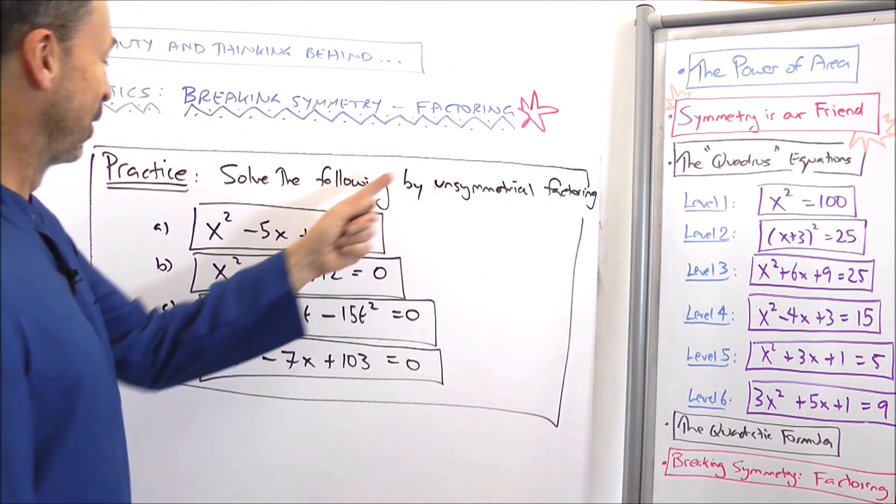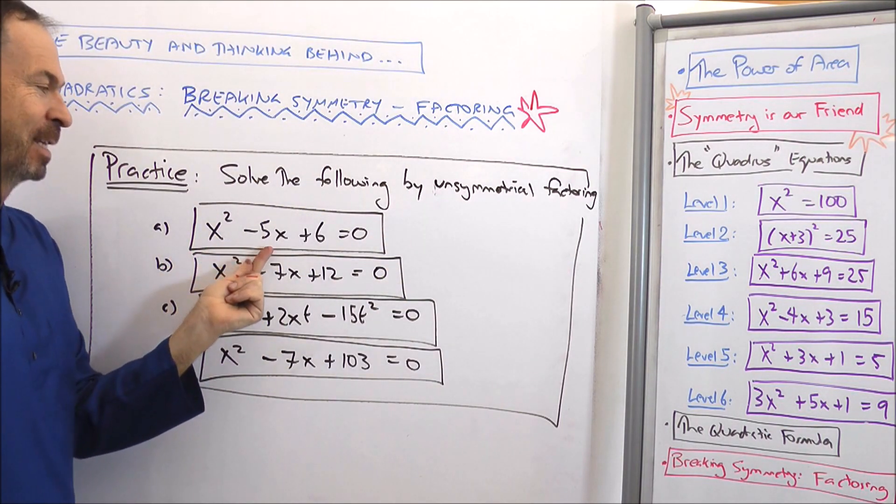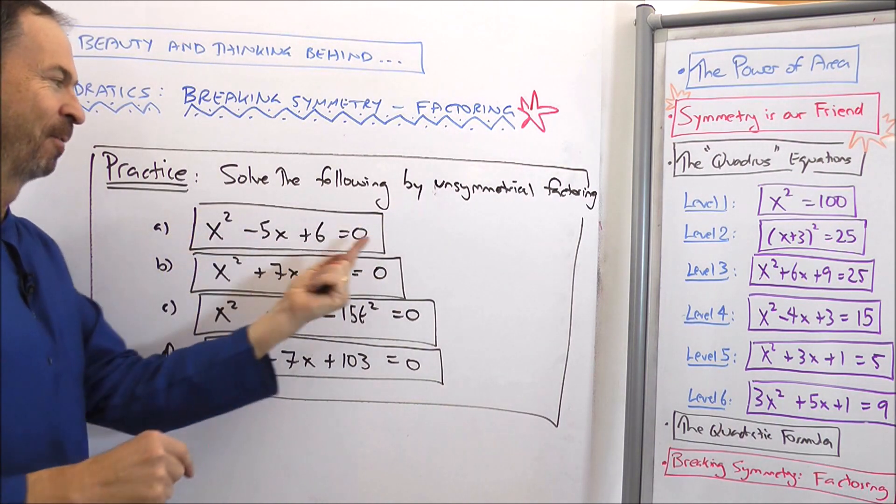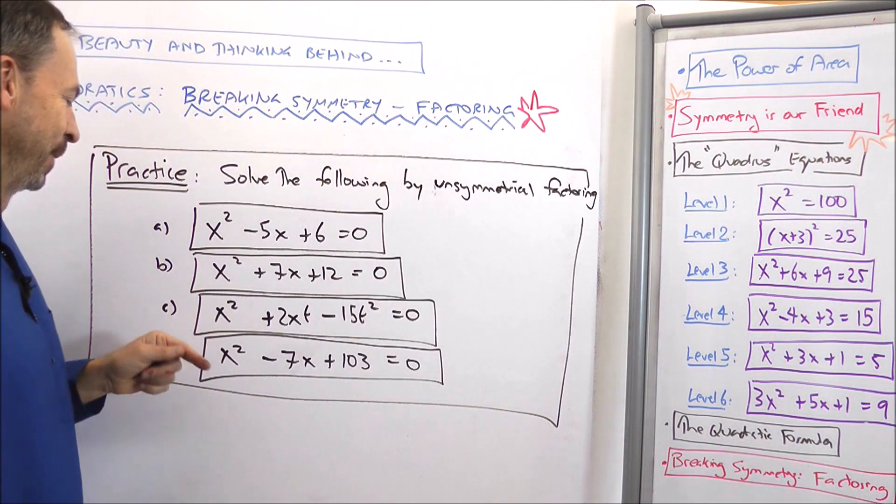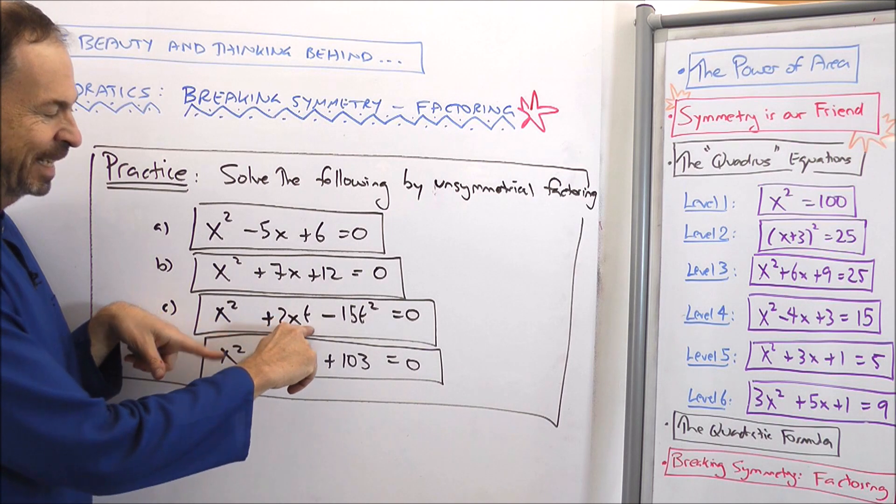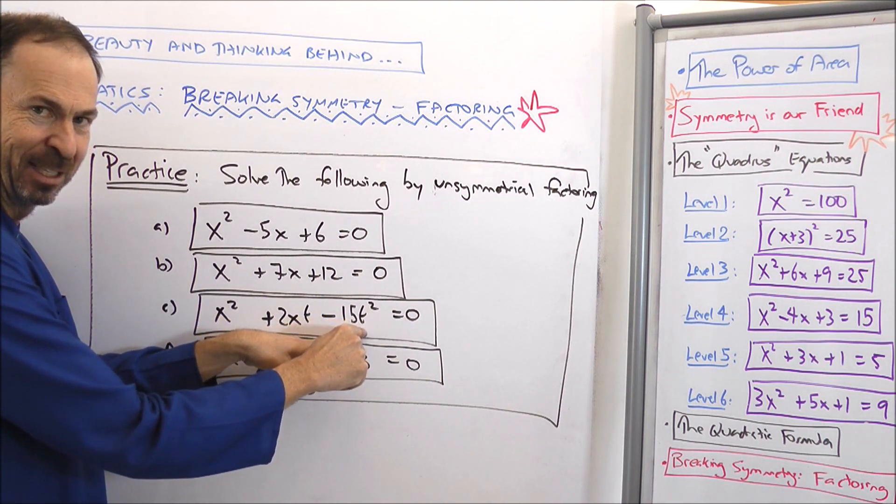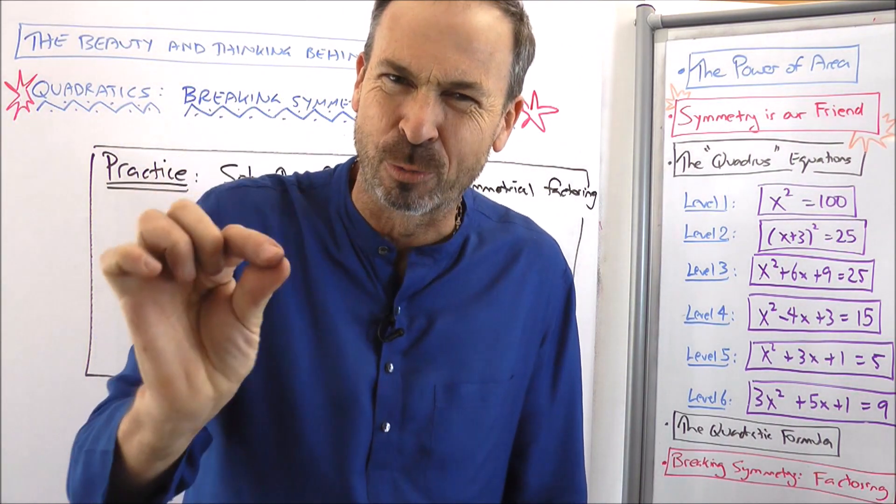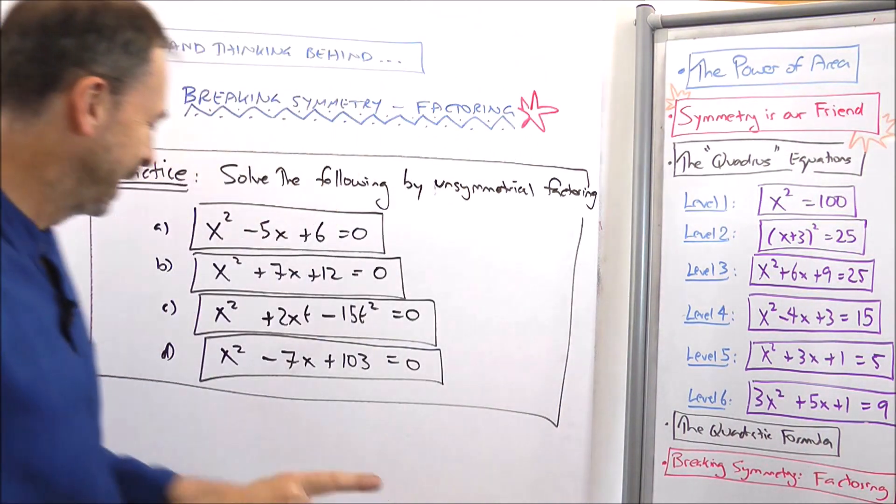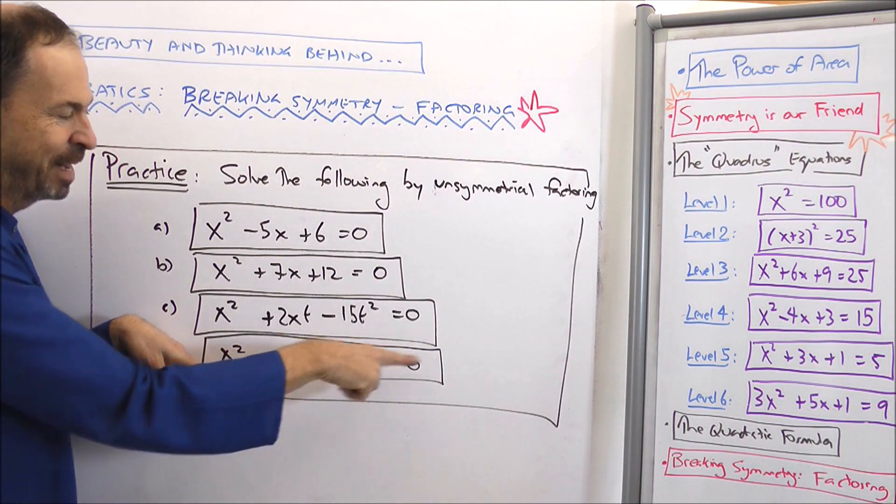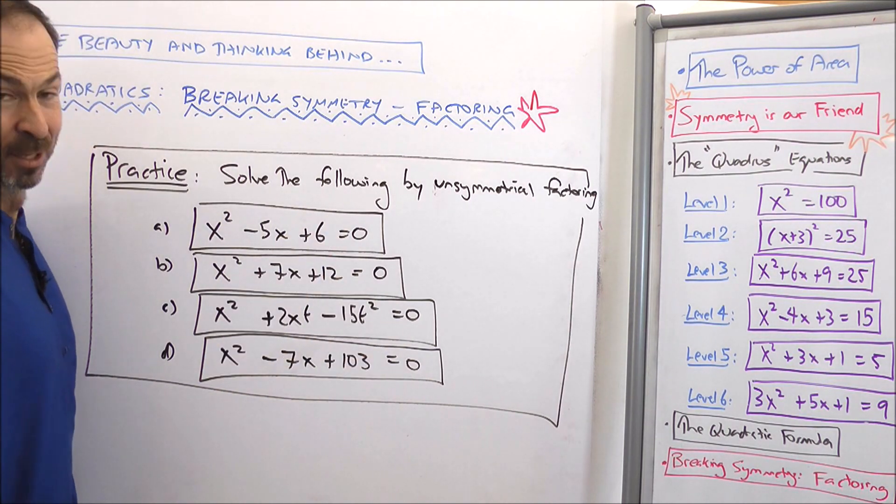Here's a practice problem for you. Please solve the following four quadratic equations by using the unsymmetrical technique of factoring. The first one is x squared minus 5x plus 6 equals 0. Can you draw an unsymmetrical rectangle of area 0 to solve that one? x squared plus 7x plus 12 equals 0. Here's one that's a little more complicated. It's x squared plus 2xt minus 15t squared equals 0. So the numbers have got some t's in it. Can you still do it even if the numbers are staying a little more like algebra. And then please, please actually get to part d. Please solve x squared minus 7x plus 103 equals 0 by drawing an unsymmetrical rectangle for it. Can you do it? So try these four and you might have to pause the video to have enough time to do it.